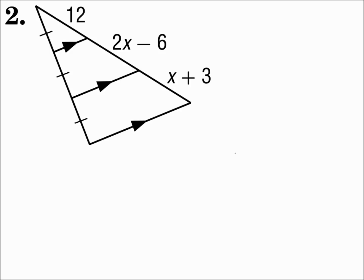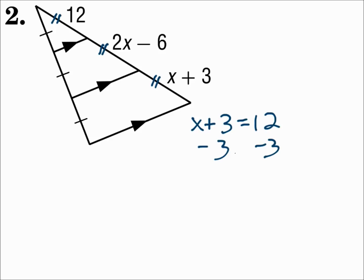Number 2. Here you have three parallel lines that intersect two transversals, so it cuts those transversals into proportional parts. If you look at the three parts on the left, they're all congruent. And if they're all congruent on the left, then they're all congruent on the right. To solve for x, pick the two easiest ones — x plus 3 and 12 — and make them equal each other: x plus 3 equals 12, so x is 9. When parallel lines intersect transversals and the parts are congruent on one side, they're congruent on the other side too.